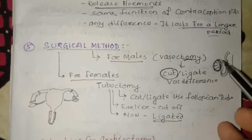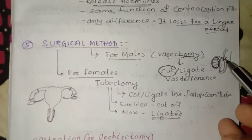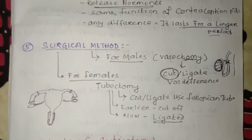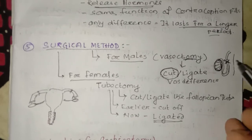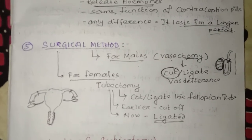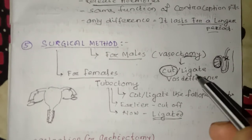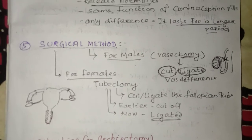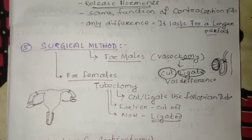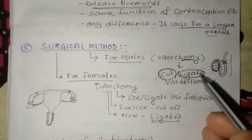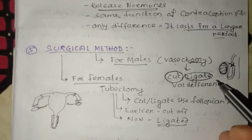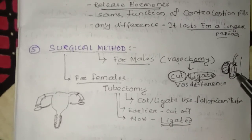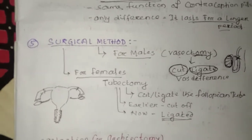If you want to get pregnant after using this method, you will need to have the implant removed. You can re-establish a hormonal balance and restore fertility. There are different types you can use depending on your situation, as each maintains a certain hormonal balance.